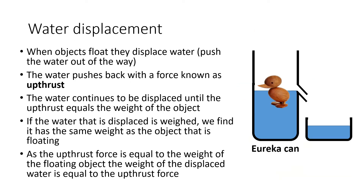It is actually possible to do an experiment to measure the upthrust force. We need a piece of equipment called the Eureka can — it's a metal can with a little funnel in it, so that as the water level increases it pours out the funnel and can be collected, allowing you to measure the volume of water displaced when you put an object in. When we get the volume of water displaced, the upthrust is equal to the weight force of the displaced water. So working out the weight of the displaced water gives us a measurement for the upthrust force.